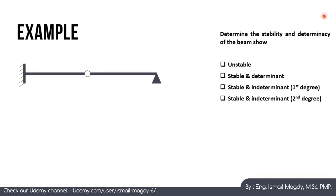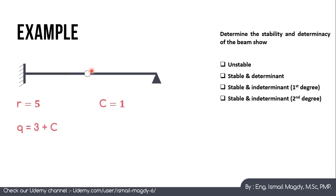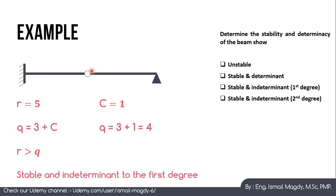Let's check an example. We want to determine the stability and determinacy of this beam. We calculate the number of reactions: the hinge support gives horizontal and vertical reactions (2), and the fixed support gives horizontal, vertical, and moment reactions (3), so R equals 5. C equals 1 because there is one internal hinge, so Q equals 3 plus 1 equals 4. Since R equals 5 is greater than Q equals 4, the beam is stable and indeterminate to the first degree, because R minus Q equals 1.